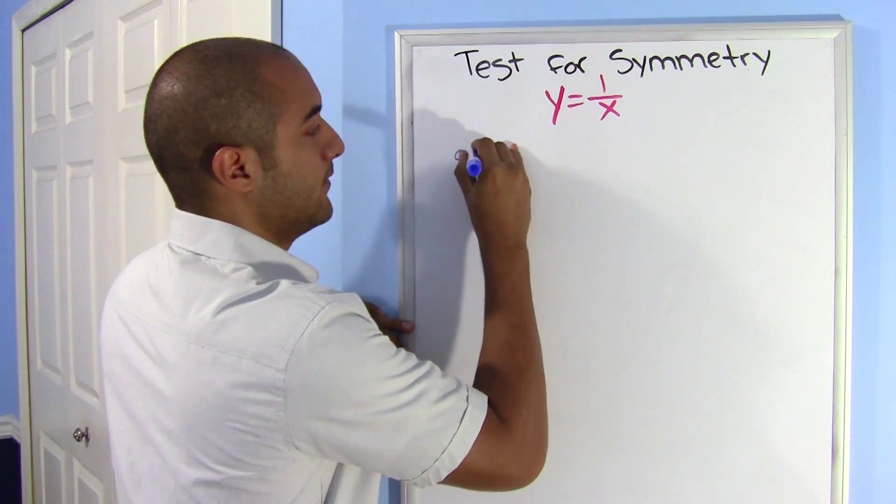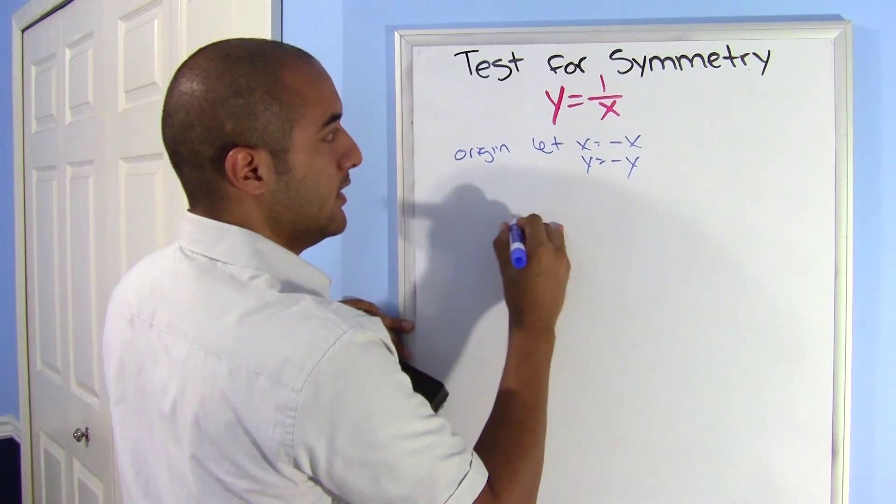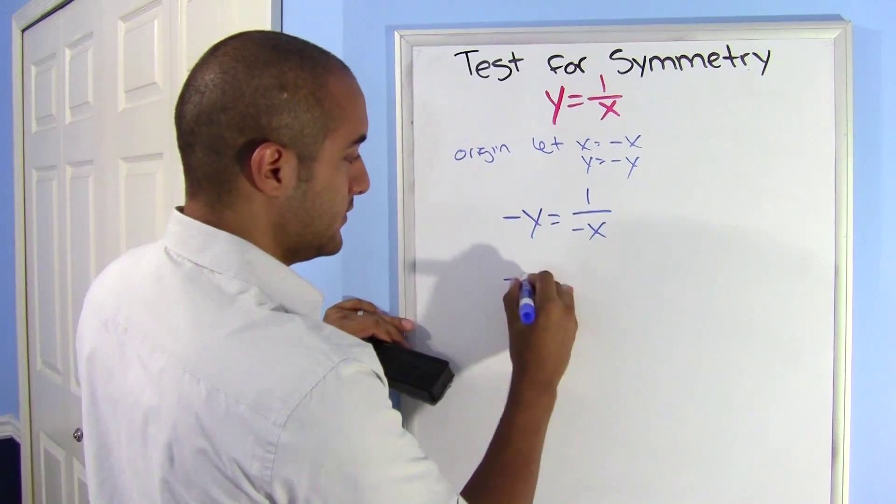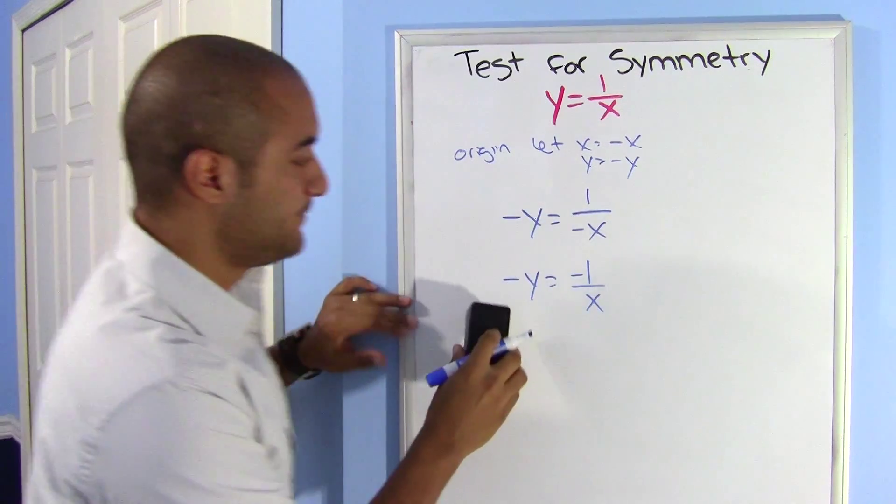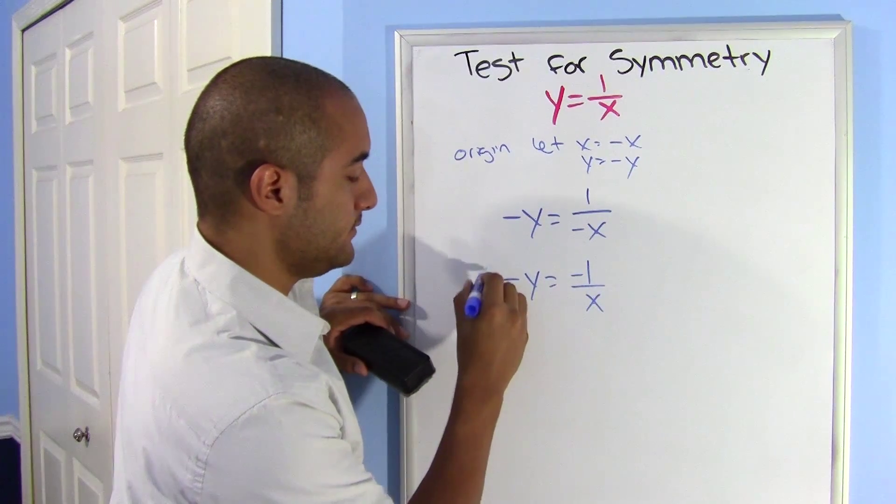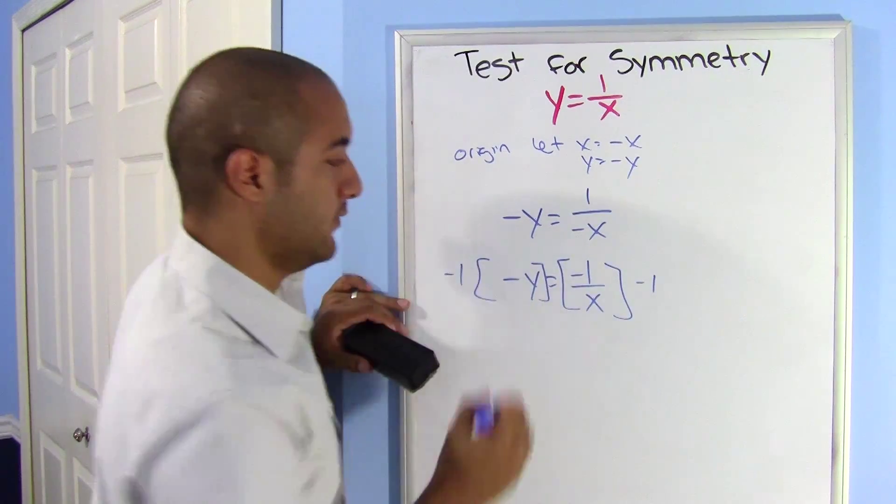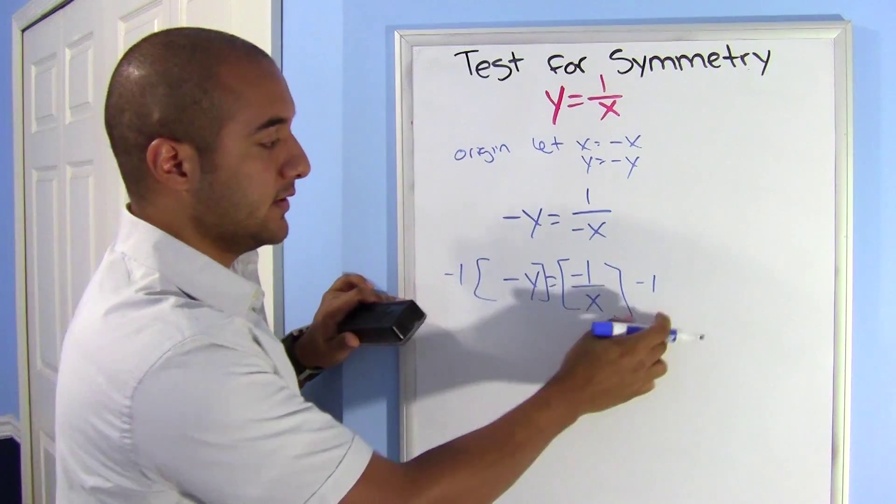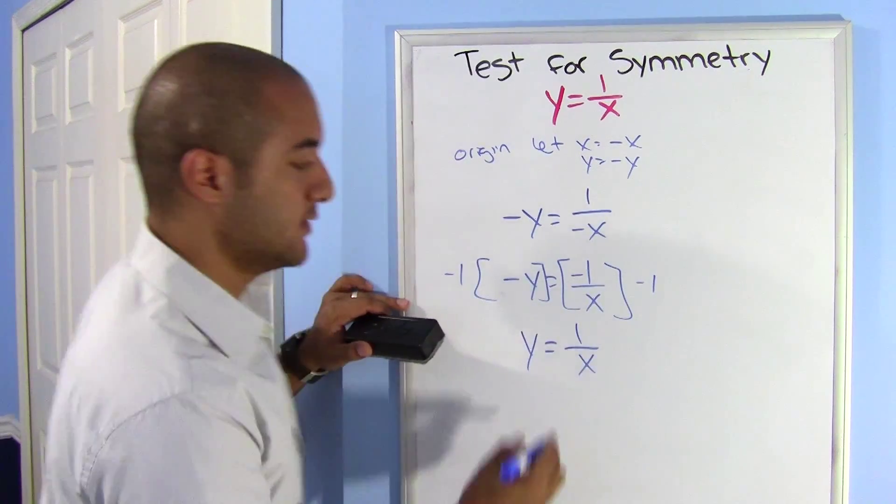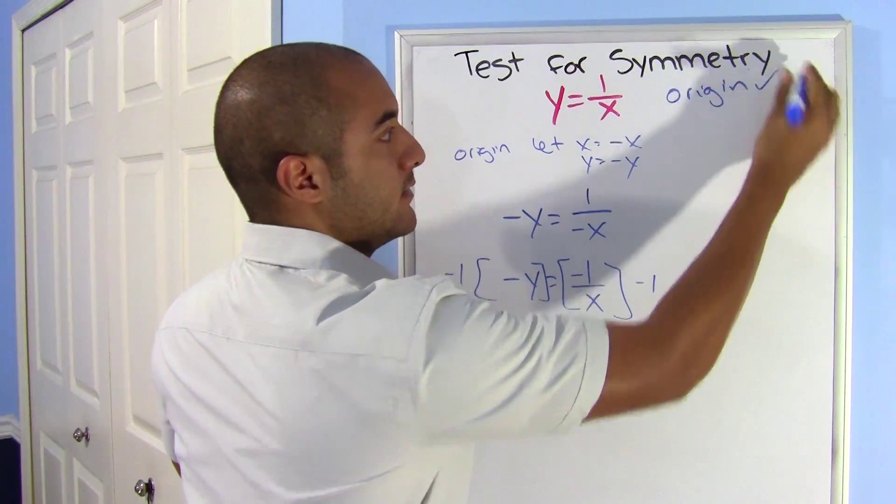And now we test our origin. Let x equal negative x and y equal negative y. So negative y equals 1 over negative x. Once again, I'll just move that to the top. Now this says, this has one term on each side, negative with a negative. If I multiply by negative 1 on both sides, which is fine, I can do that, it's a legal move because I'm doing it to both sides, I get back y equals 1 over x, which is the original equation. So yes, this one is symmetric about the origin. There.